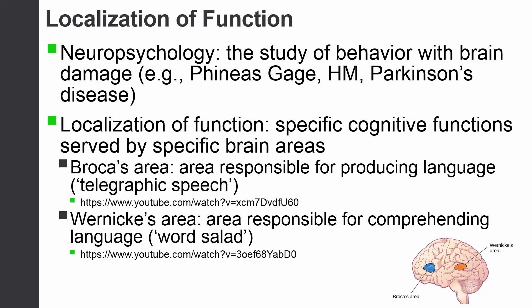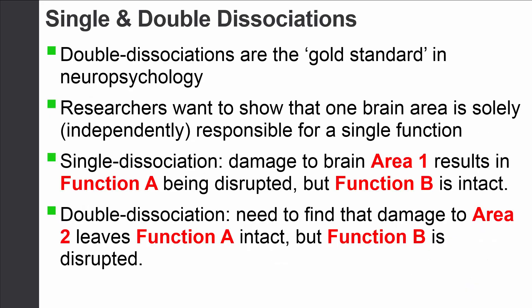We're going to switch gears and talk about the idea of a single and a double dissociation. The double dissociation — you probably heard about it in your intro psych course — is basically the gold standard in neuropsychology. It is the cream of the crop for really understanding how the brain functions. If you have a double dissociation, you are going to really impress a neuropsychologist.